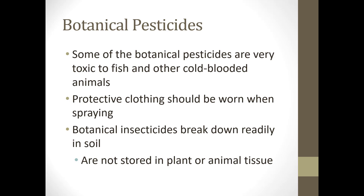Some botanical pesticides are among the most deadly fast-acting toxins and potent carcinogens that occur naturally — such as nicotine. Some are very toxic to fish and other animals, so you still need to wear protective clothing. However, they do break down readily in the soil and are not stored in plant or animal tissue.